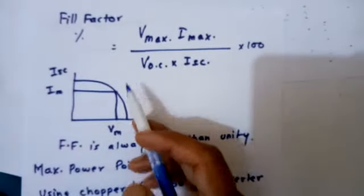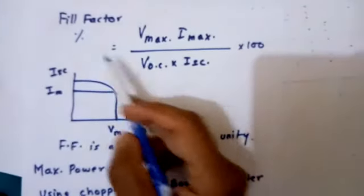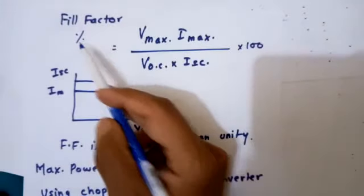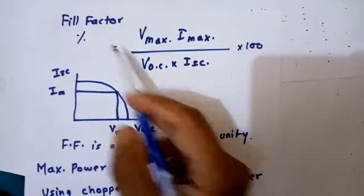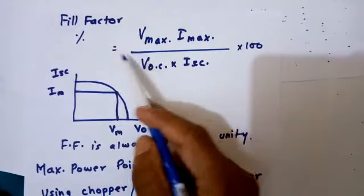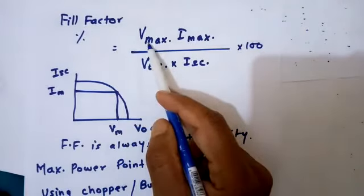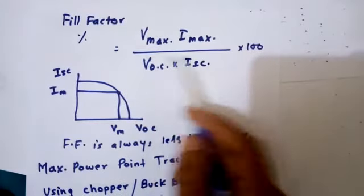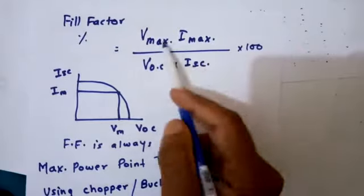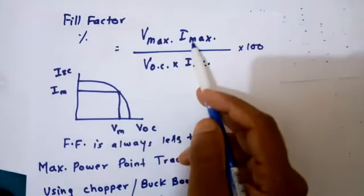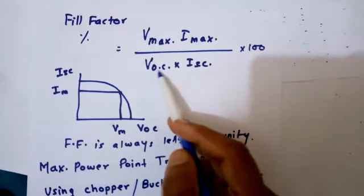Continuing the class on solar energy, we will discuss fill factor. Fill factor is expressed as a percentage for any PV panel. Fill factor is the ratio of V maximum times I maximum divided by VOC times ISC. This means maximum power divided by the operating point of the solar panel.